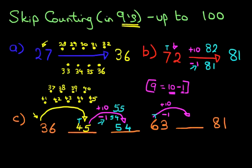63 plus ten is 73. Then we minus one, it becomes 72. And that is our answer. It really is very, very simple. And that is how we count in nines with numbers up to 100.